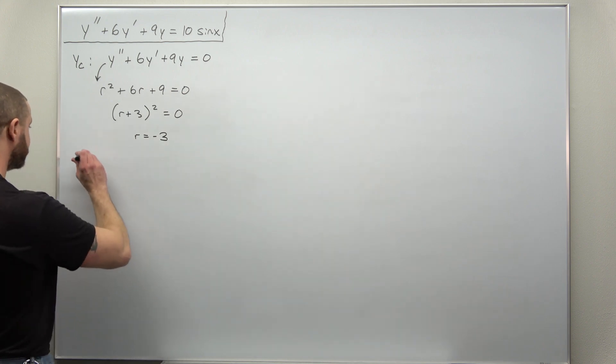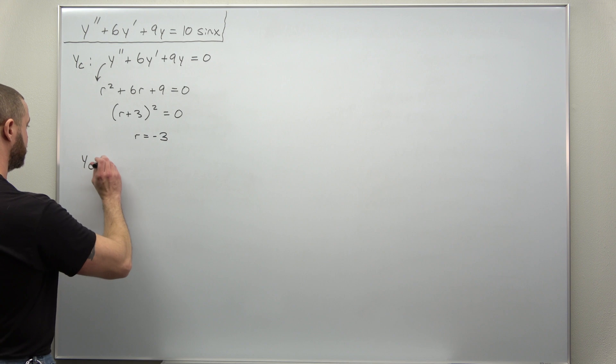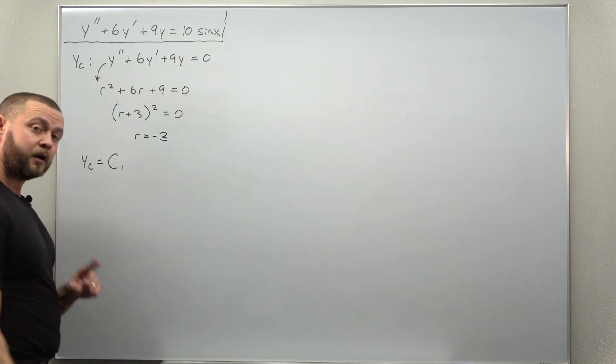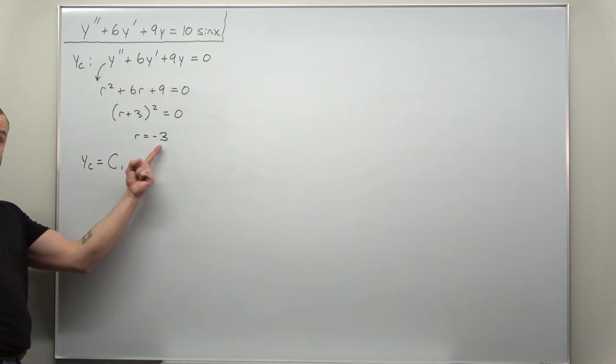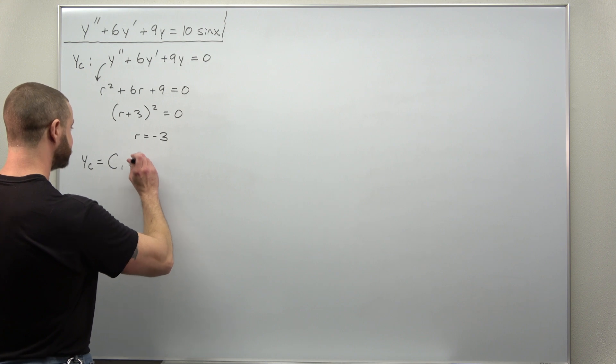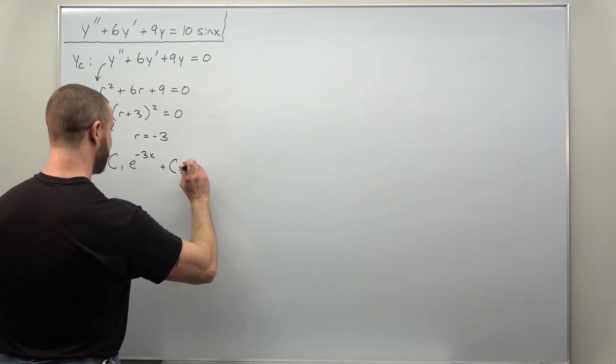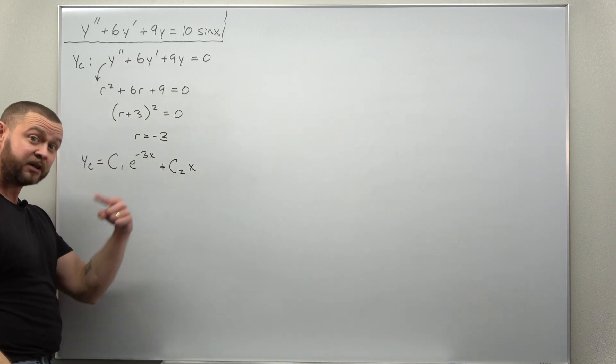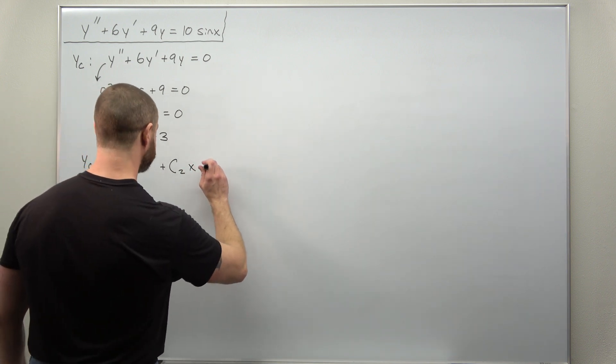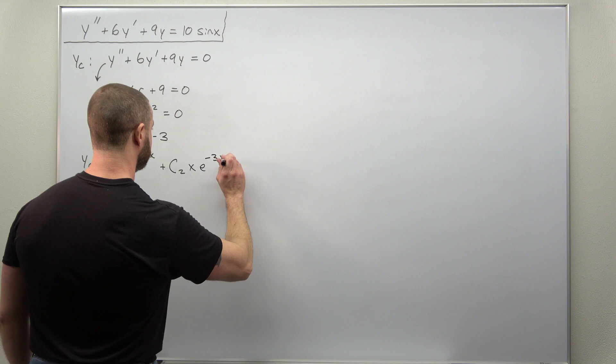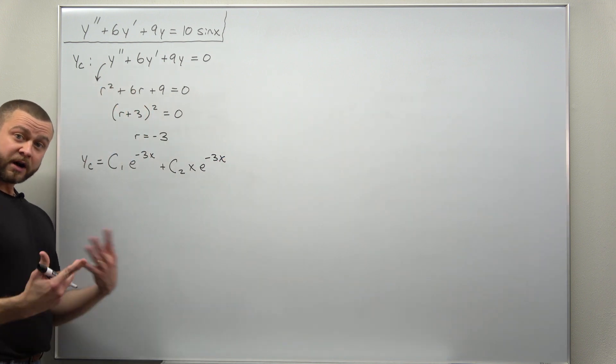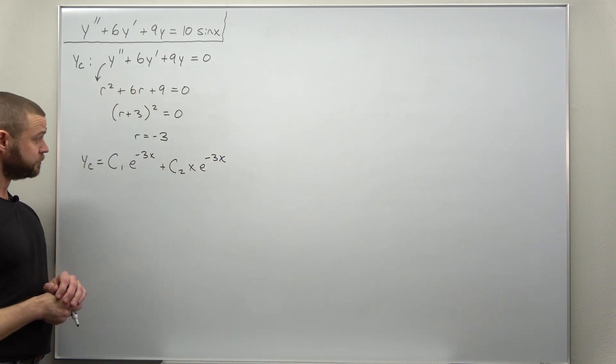So for our complementary solution, it looks like a constant times e to the negative 3x, and then we add to that another constant times x times e to the negative 3x. That takes care of finding our complementary solution.